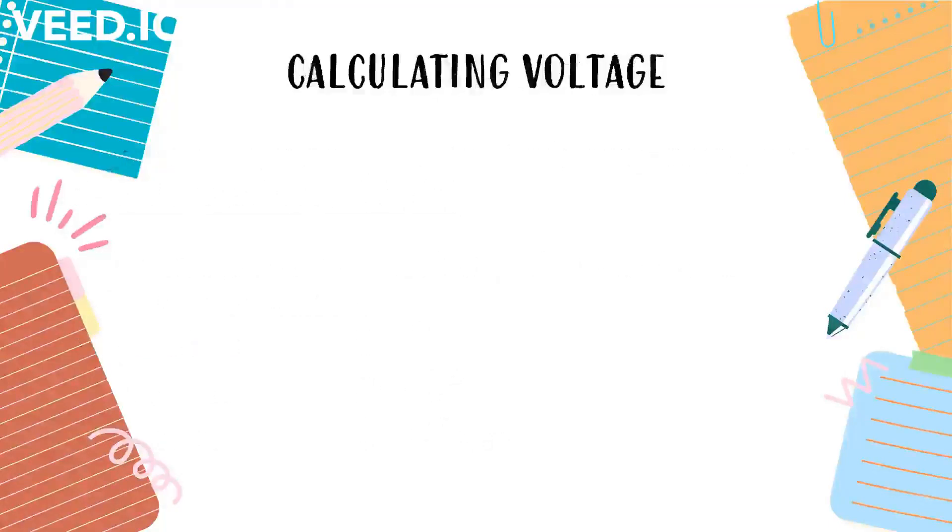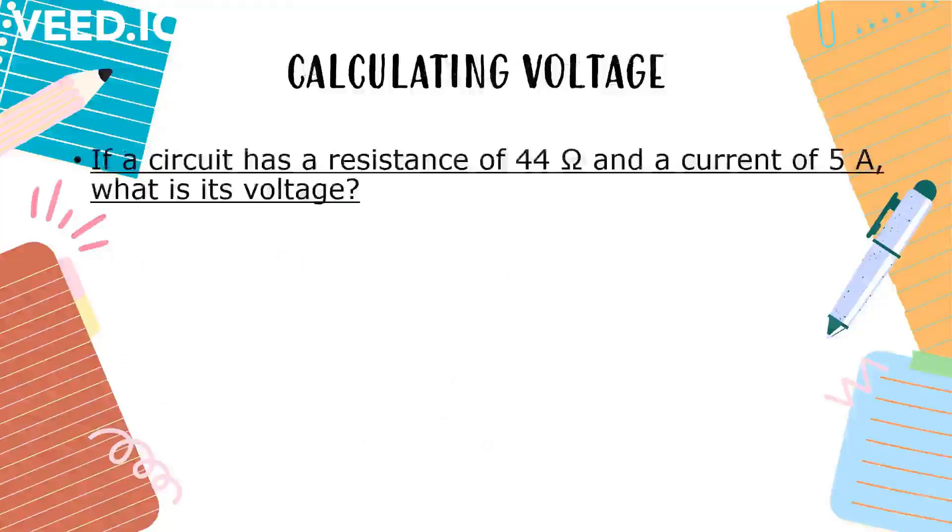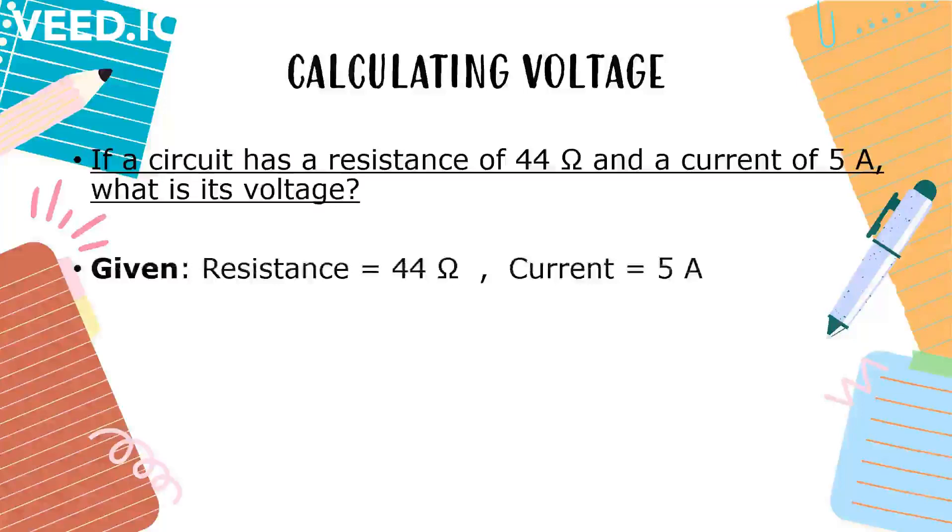Calculating voltage. If a circuit has a resistance of 44 ohm and current of 5 amperes, what is its voltage? Given, resistance is 44 ohm. Current, 5 amperes. Unknown is the voltage.